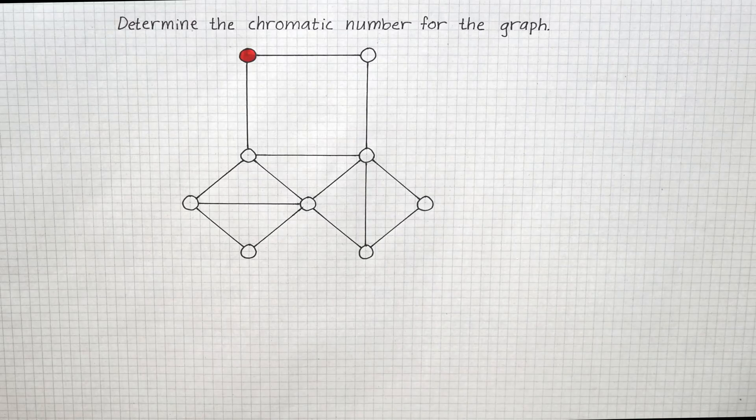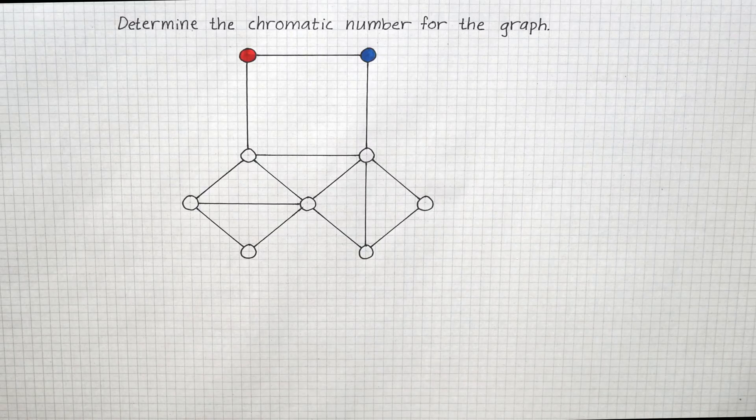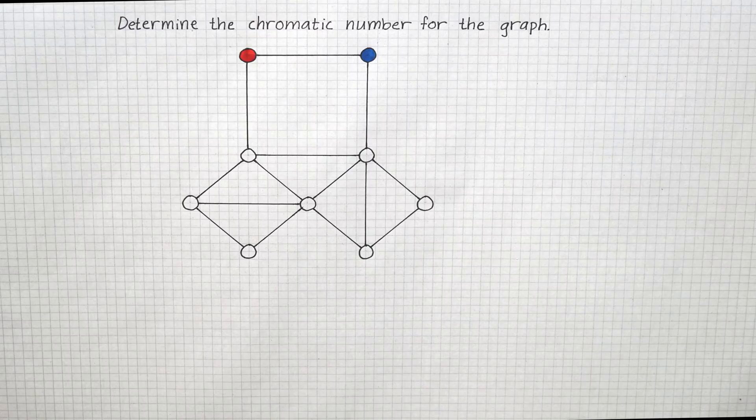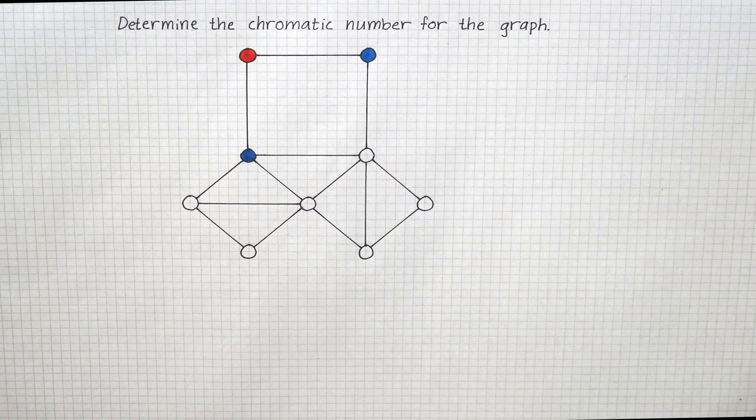And the rule now is that no node that has an edge to this first one can have the same color. So therefore we'll make this adjacent one blue, and by the same token this one will also be blue since it's connected to the red one.